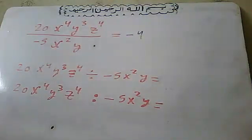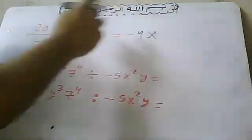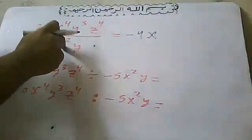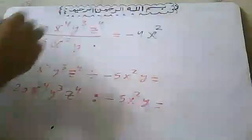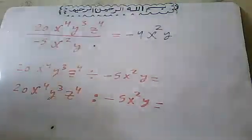OK, you do 20 divided by -5, gives -4. Then x⁴ minus x² gives x². And y³ minus y¹ gives y².